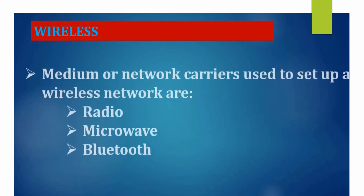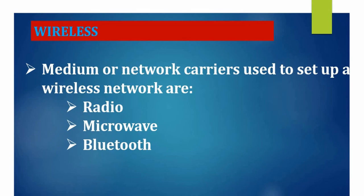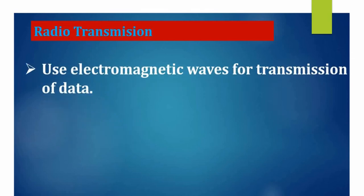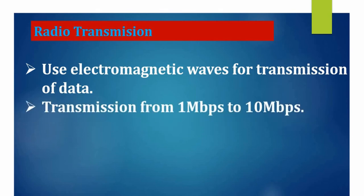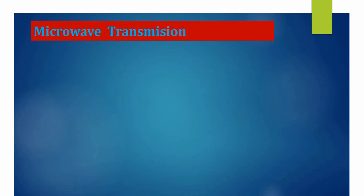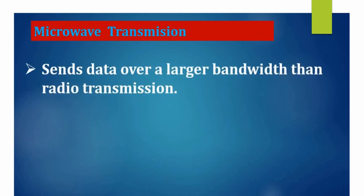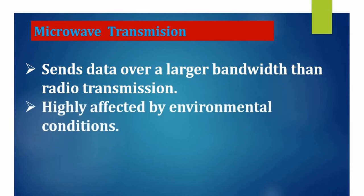For wireless networks, the transmission methods used are radio transmission, microwave transmission, and Bluetooth transmission. Radio transmission uses electromagnetic waves for transmitting data, but it can only transmit data from 1 Mbps to 10 Mbps, which is a drawback. Microwave transmission sends data over a larger bandwidth than radio transmission, but it can easily be affected by environmental conditions such as rain and storm.